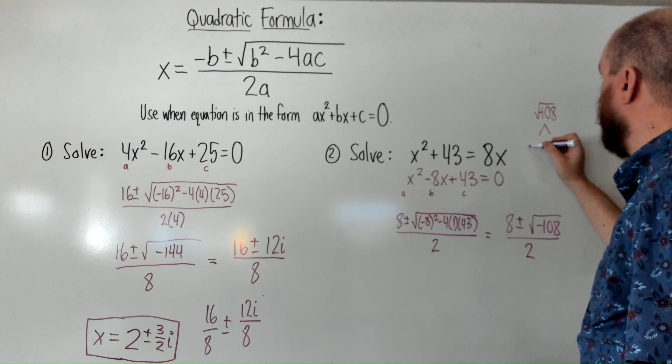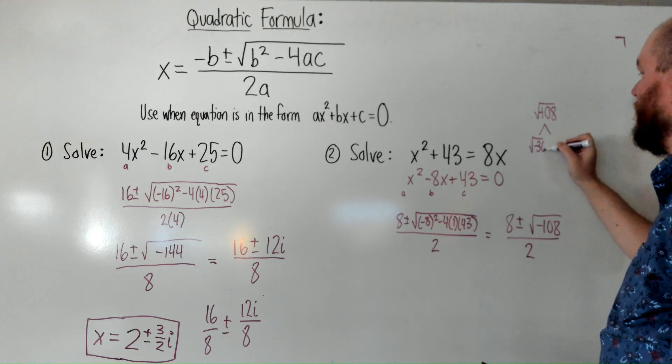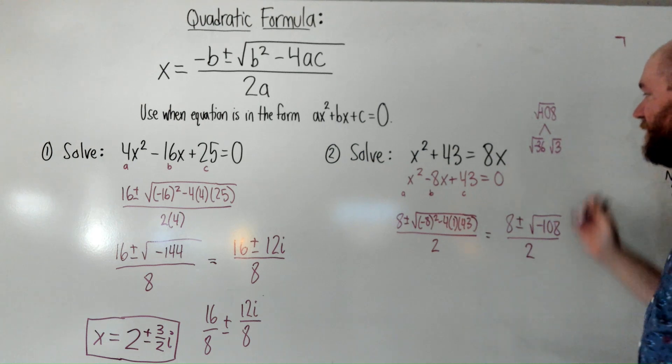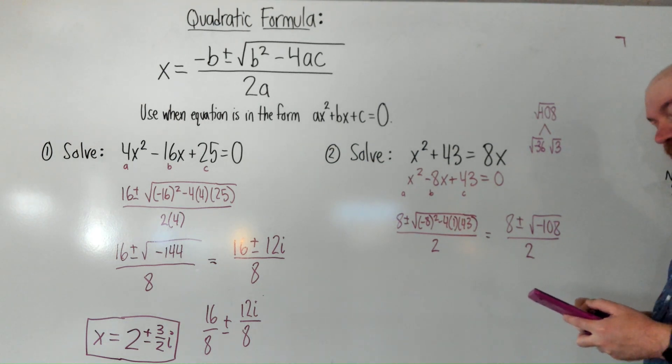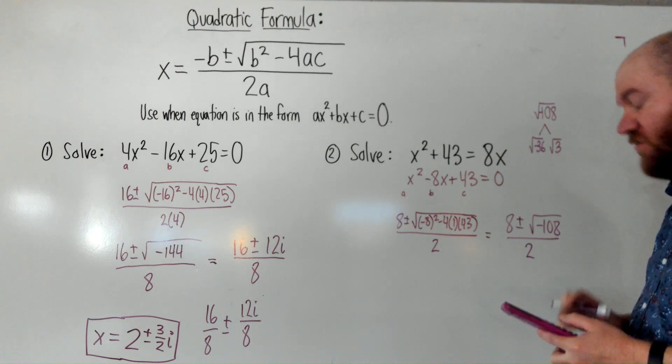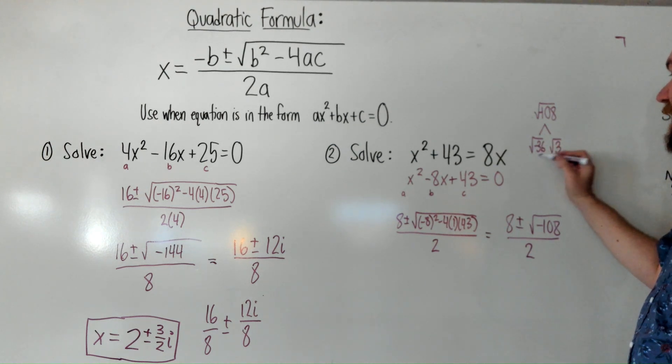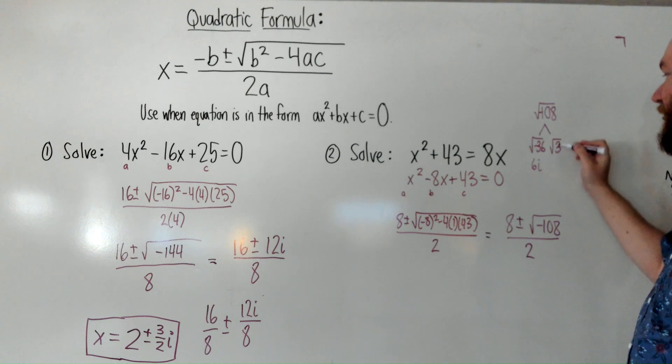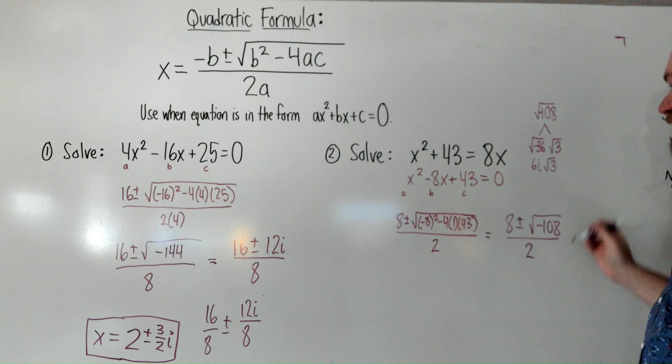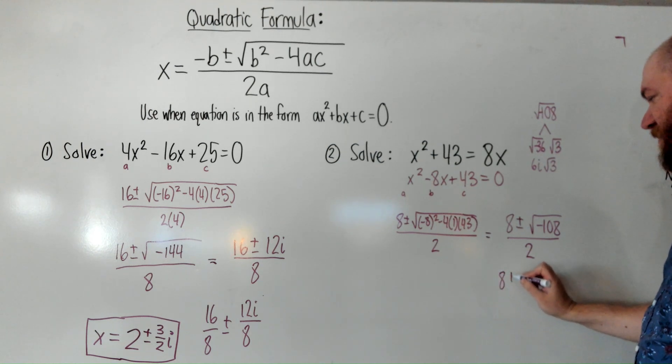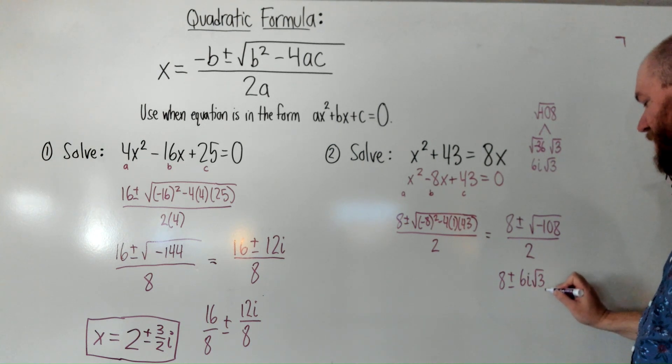So, we're going to do negative 36 times 3. This 36 times 3 is 108. And then, just scrolling to make sure. The square root of negative 36 will be 6i. And the radical 3 can't simplify. So, this is now 8 plus or minus 6i radical 3 all over 2.